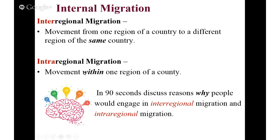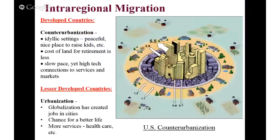Intra-regional migration is moving within one region of a country. For example, movement from Seattle to the suburban area of Renton or Kent, or moving from Carbonado to Buckley, or from Chehalis to Olympia — that's all intra-regional. It's the same region of the country. Moving from the suburbs into the city, or from the city out to the suburbs — that's all intra-regional migration.